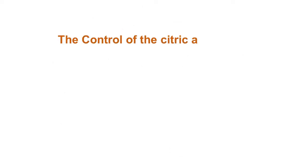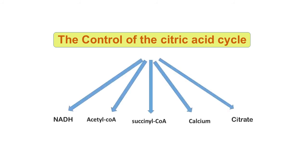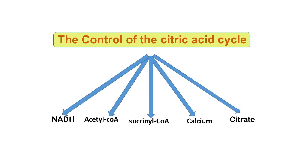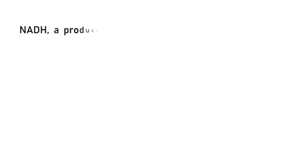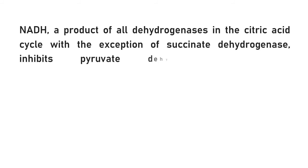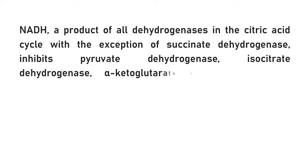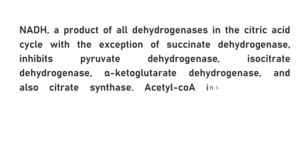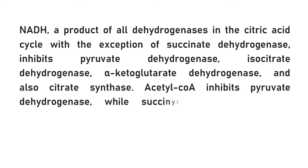There is a multi-tier regulation of the TCA cycle. NADH is a product of all dehydrogenases in the citric acid cycle, with the exception of succinate dehydrogenase. It inhibits pyruvate dehydrogenase, isocitrate dehydrogenase, alpha-ketoglutarate dehydrogenase, and also citrate synthase. Acetyl coenzyme A inhibits pyruvate dehydrogenase, while succinyl coenzyme A inhibits alpha-ketoglutarate dehydrogenase and citrate synthase.